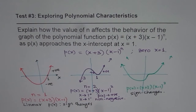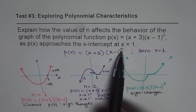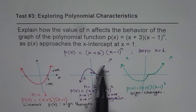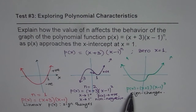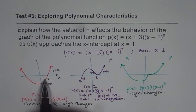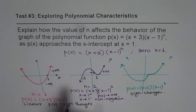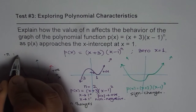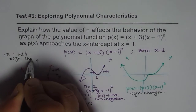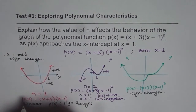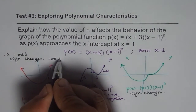To summarize: when n is odd, as in the cases n equals 1 and n equals 3, the sign of the polynomial changes — it changes from negative to positive as you read the graph from left to right. If n is odd, the sign changes.